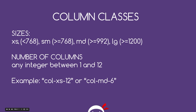If we use 'xs' for the size, we're targeting all viewports less than 768 pixels in width. If we use 'sm' that stands for small, targeting viewports greater than or equal to 768 pixels. 'md' targets viewports greater than or equal to 992 pixels. And 'lg' stands for large, targeting all screens equal to or over 1200 pixels.